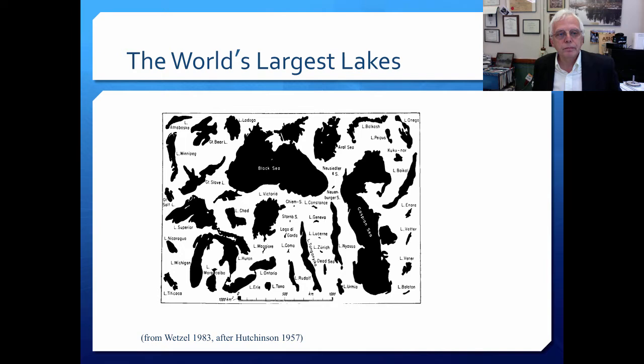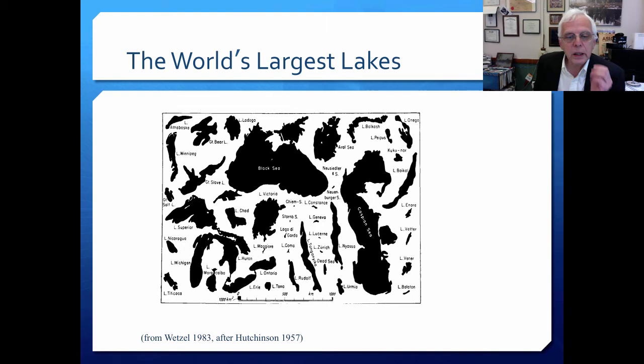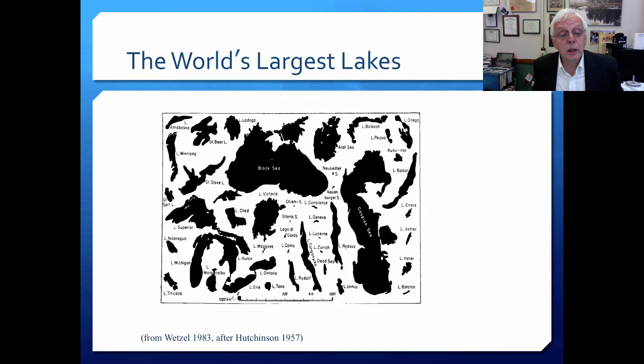Here are the world's largest lakes all gathered together. It may surprise you that things like the Caspian Sea, Black Sea, and Aral Sea are actually lakes — they are enclosed. There's quite a lot of saline water in some of these very large lakes. Lake Superior is considered the largest area freshwater lake in the world, while Lake Baikal has even more volume because it's very, very deep.